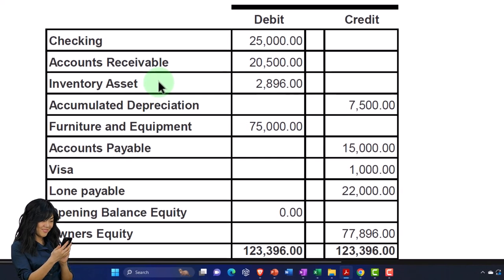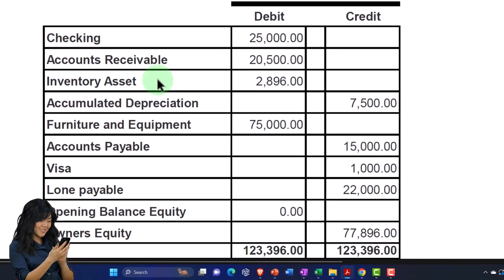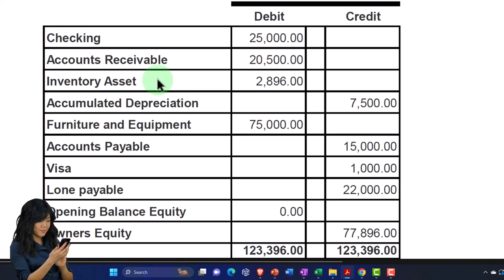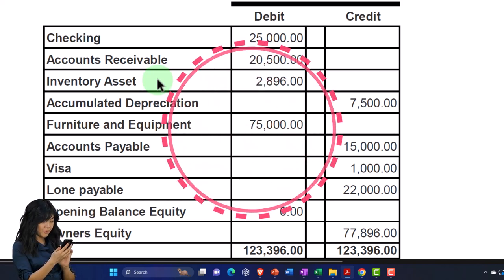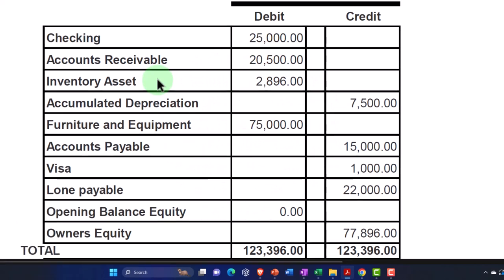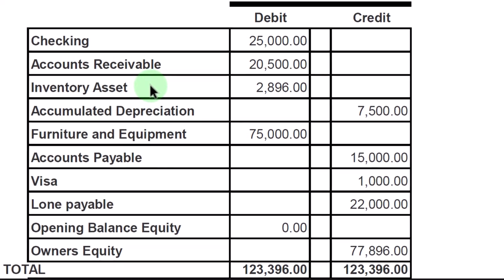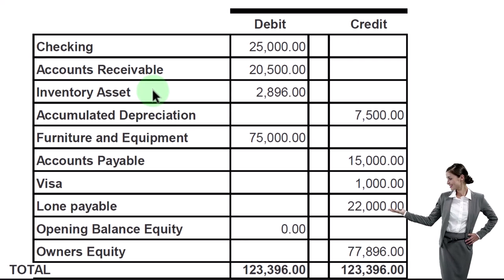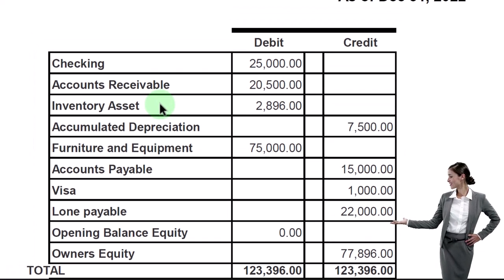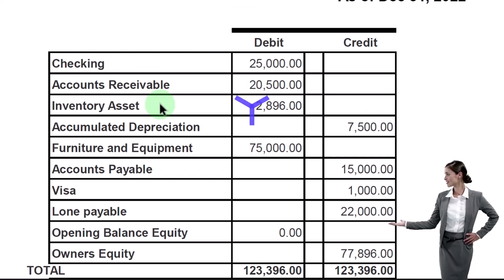We played into the preliminary process of how this is going to work when we looked at service items — those things populating invoices and sales receipts, or the money-in forms when we're not selling actual inventory. Now we're going to be adding to that, adding the inventory items on a perpetual inventory system. We want to put the inventory items in place.